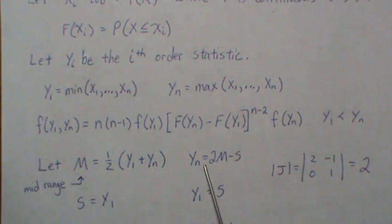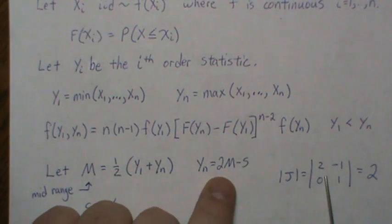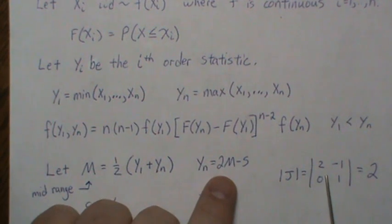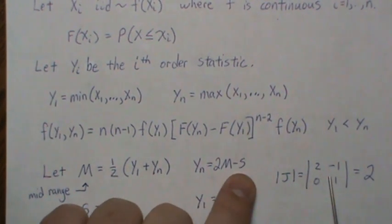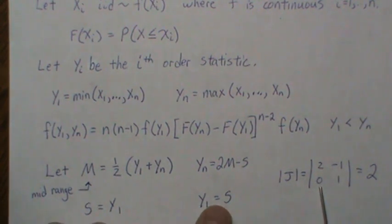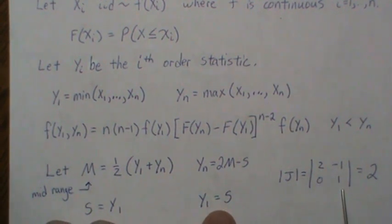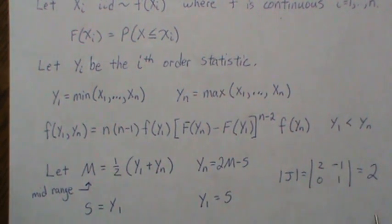Back-solving for Y_1 is easy, and for Y_N we get 2M minus S. The Jacobian of this transformation is computed as the matrix of partial derivatives: the partial of Y_N with respect to M and with respect to S. The derivative is 2, so the absolute value of the Jacobian is 2.